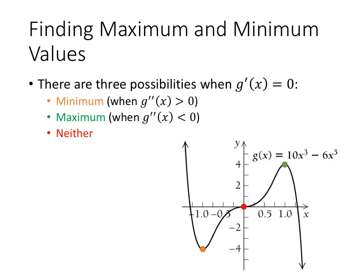There are three possibilities. We might get a minimum, which happens when the second derivative is greater than zero. We might get a maximum, which happens when the second derivative is less than zero. Or we might get neither.